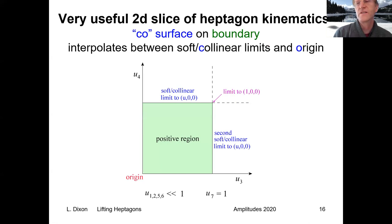I can't show you the whole six-dimensional heptagon kinematics but I can show you a two-dimensional slice which we call the CO surface because it interpolates between soft/collinear limits and the origin. This plane here is where we take U3 and U4 to be arbitrary. They can run from zero to infinity but the four of the other ones have to be infinitesimal, very small, and U7 has to be equal to one. This is an allowed region that satisfies the gram determinant constraints for any values of U3 and U4 as long as these are infinitesimal. The origin is where we also take U3 and U4 to be very small. These limits here turn out to be where you approach six-point kinematics. In fact you approach that U=0 line segment which is on the boundary of six-point kinematics.